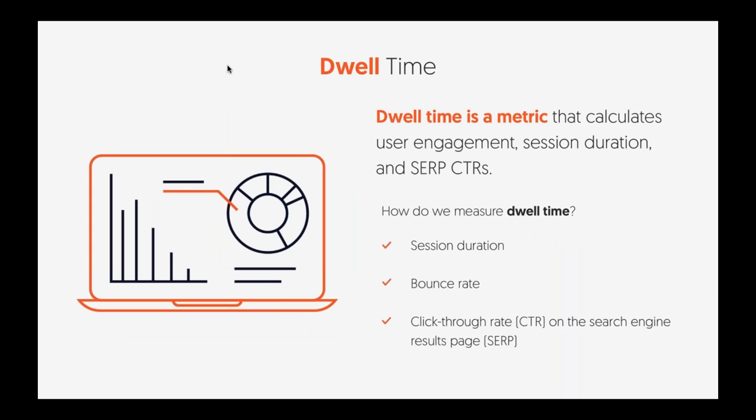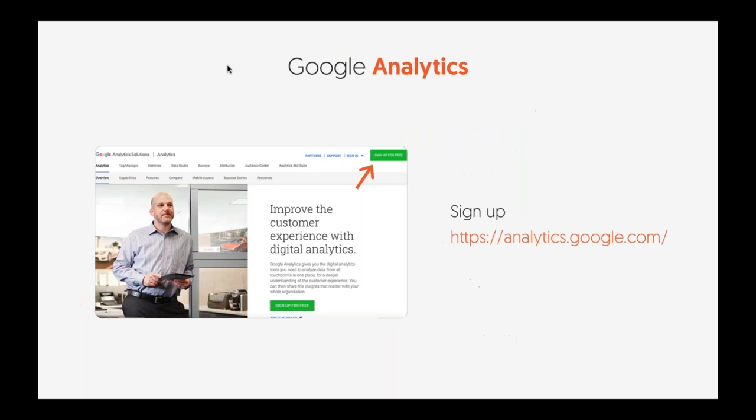Dwell time is a metric that calculates user engagement, session duration, and SERP CTR. So how do you measure dwell time? It's a combination of those three things, and I'm going to show you how to get this information through Google Analytics.